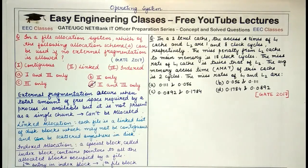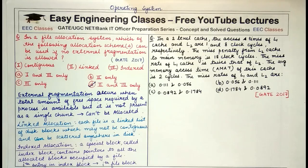Now for the second question: in a two-level cache, the access times of L1 cache and L2 cache are 1 and 8 clock cycles respectively. The miss penalty from L2 to main memory is 18 clock cycles, and the miss rate of L1 cache is twice that of L2. The average memory access time is 2 cycles. Find the miss rates of L1 and L2.